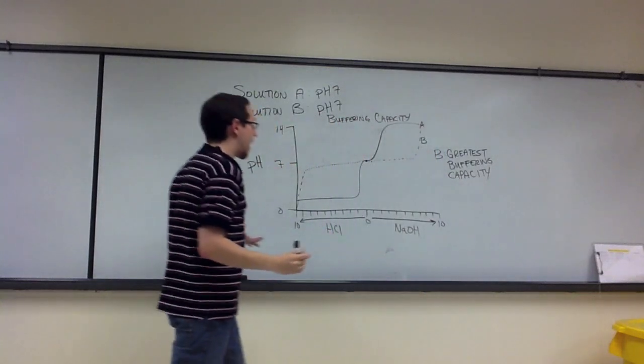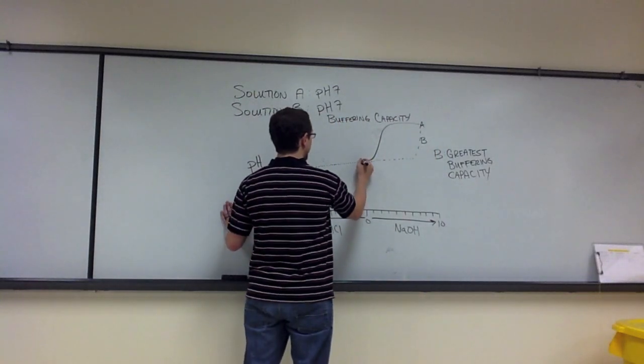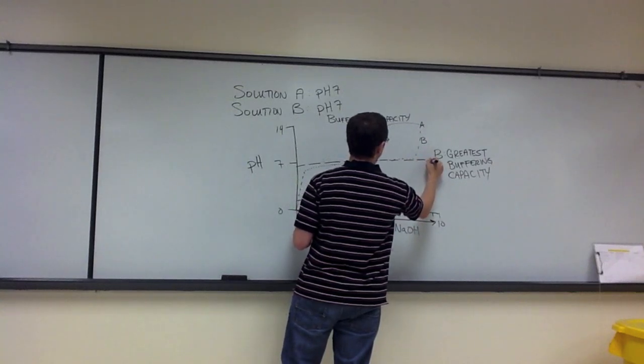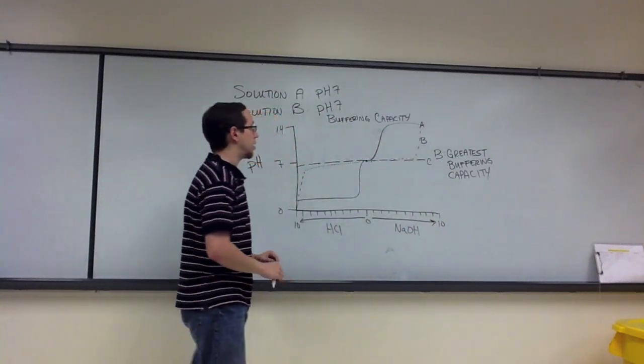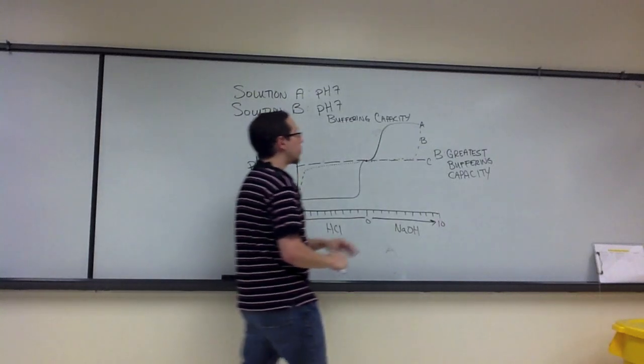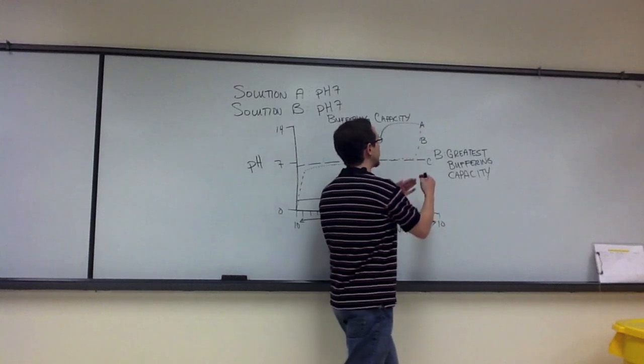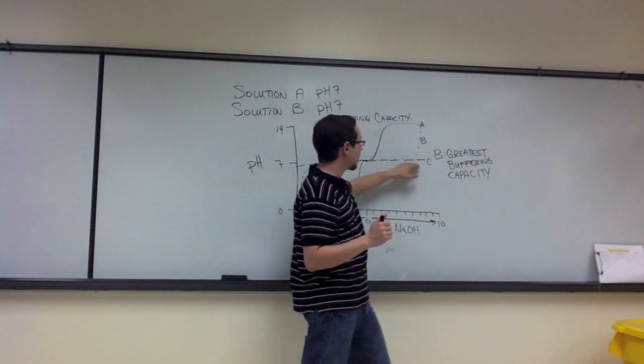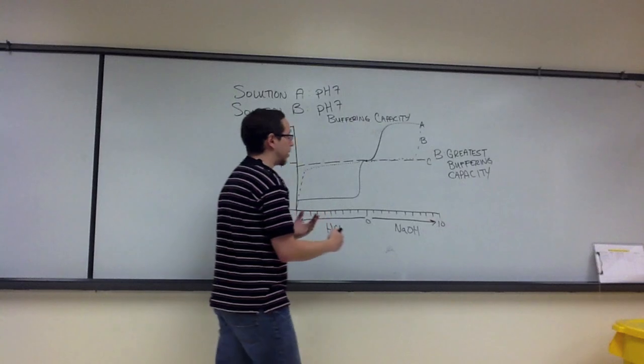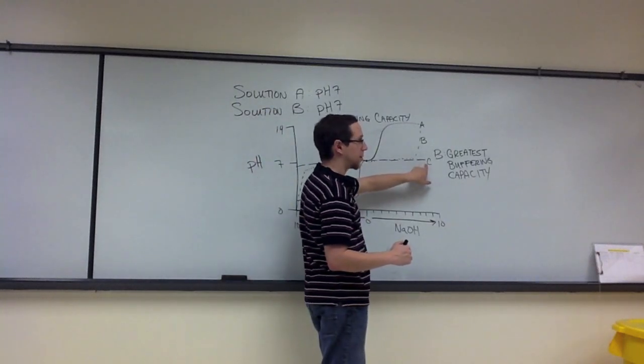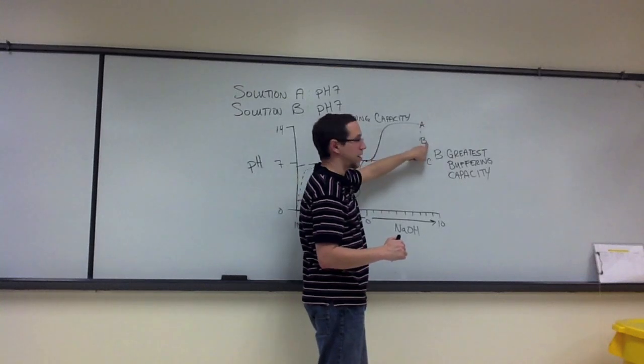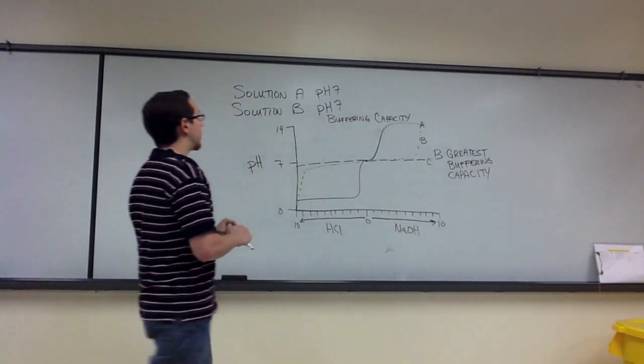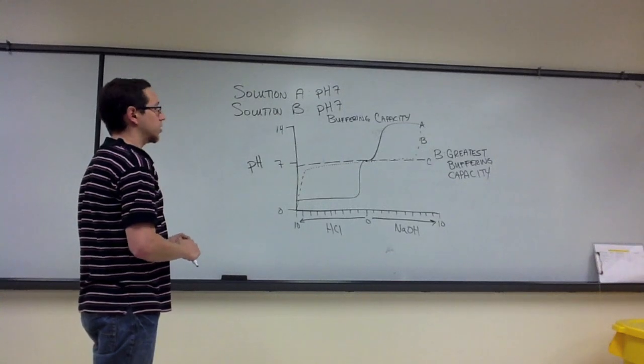Now if we had a third solution, C, that was able to do something that looked like this, where it constantly just basically stayed exactly at its initial pH, then C would then be the particular solution with the greatest buffering capacity. So when we say greatest buffering capacity, it's a relative term meant to compare multiple solutions. In your exercise, you were comparing A and B. If we had a third solution that looked like this, we would be comparing A, B, and C. And to that degree, we could then say C has the greatest buffering capacity, and it has a better buffering capacity than A or B. But we could still say that B has a better buffering capacity than A. So that was the buffering exercise and the buffering capacity exercise that you performed in lab.